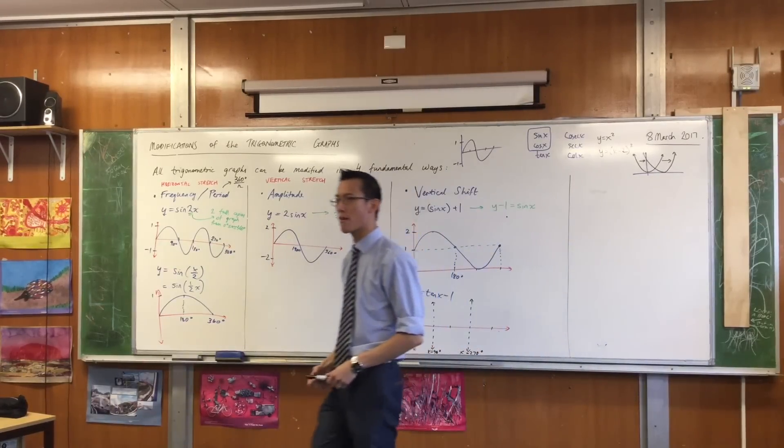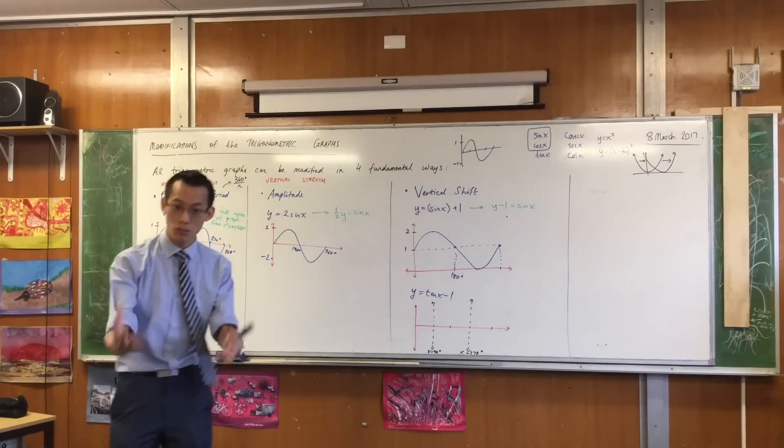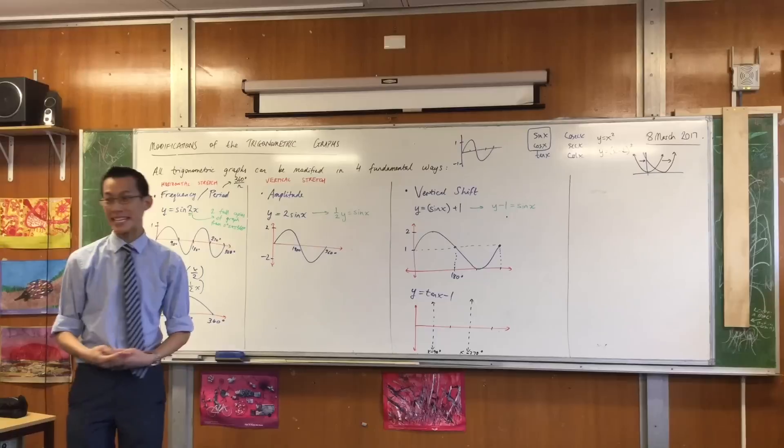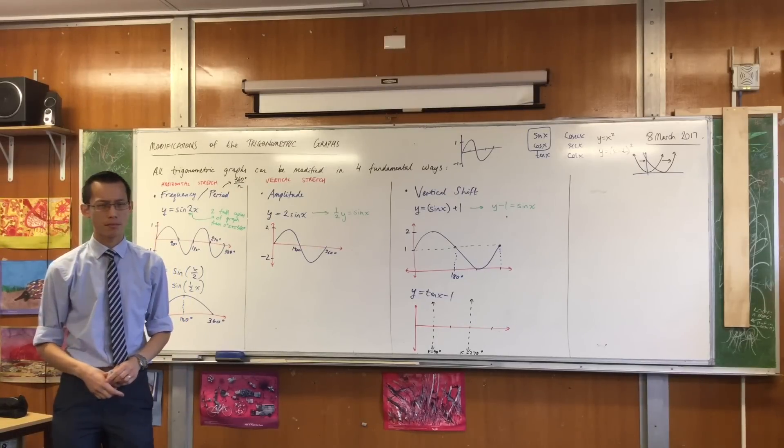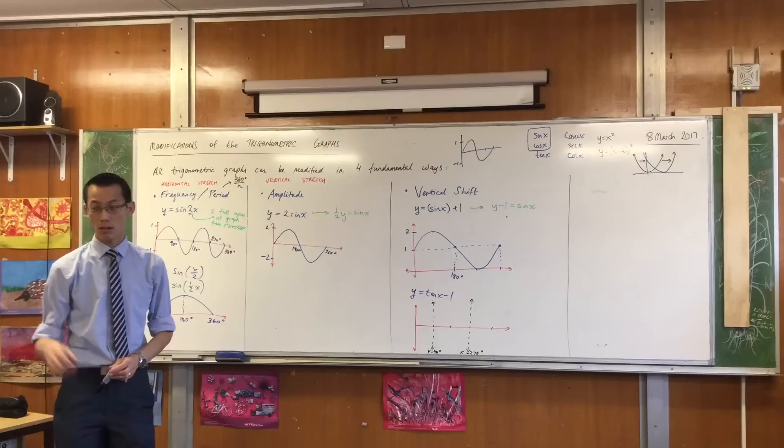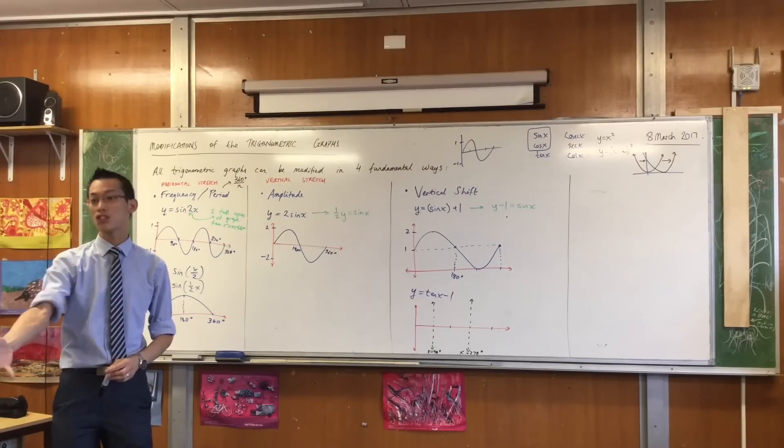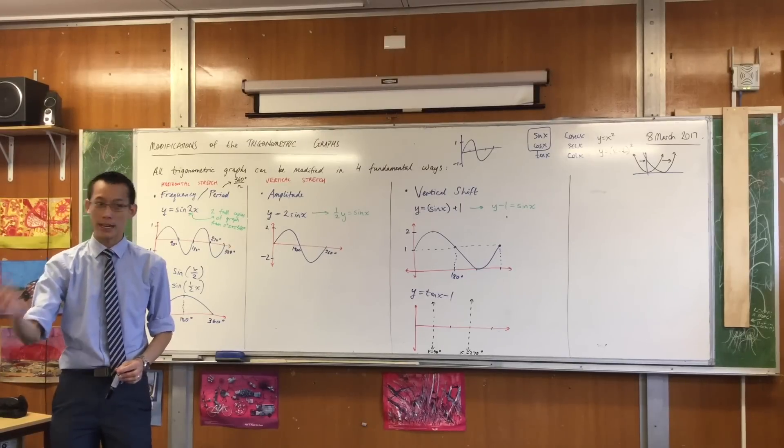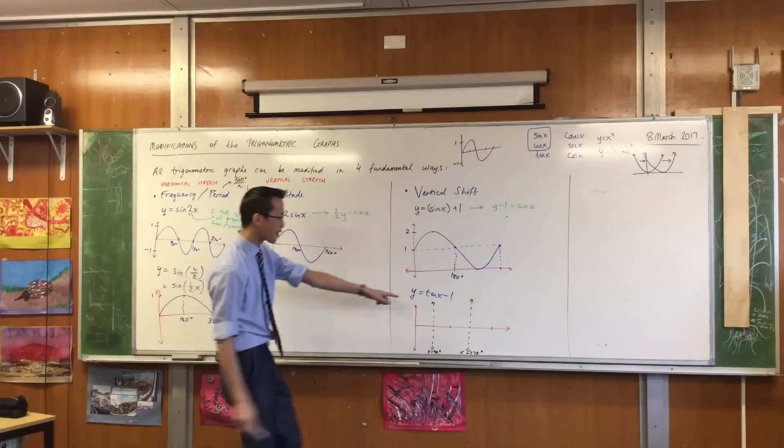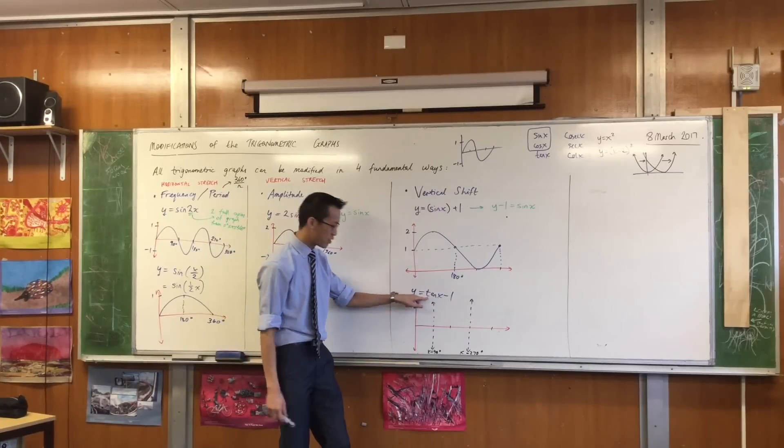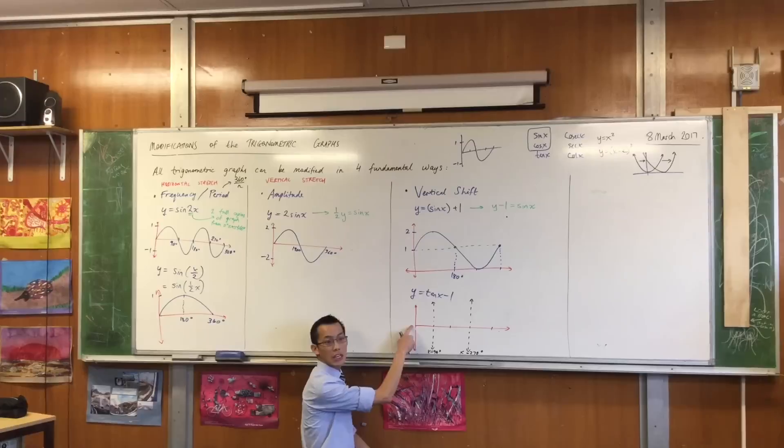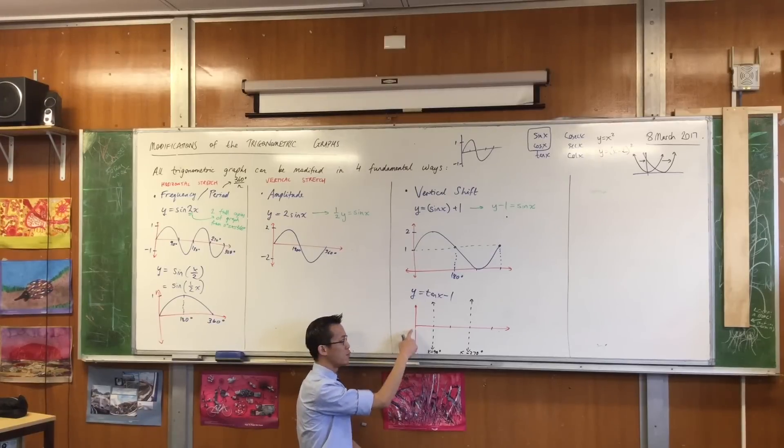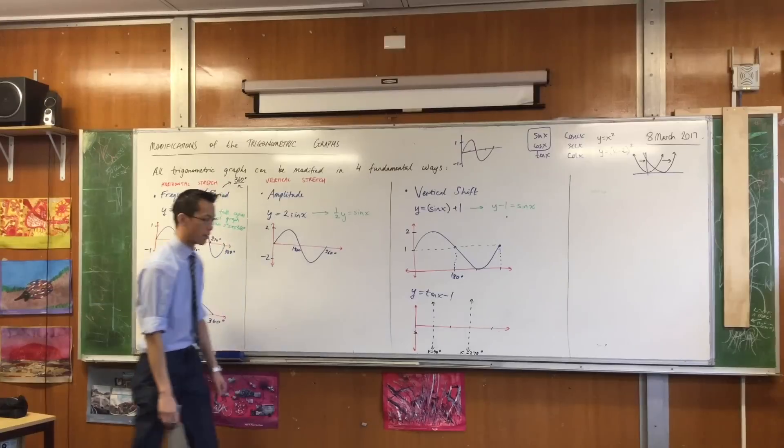Okay, so tan x, do you know the graph well enough to know where does it usually, regularly, begin? When x equals 0, what's tan 0? Tan 0 is 0, isn't it? You can check this on your calculator if you ever have doubt. Tan 0 is 0, but I'm not going to start there anymore, am I? I'm going to 0 minus 1, yeah? So instead of having an intercept here at the origin, I'm actually going to move down a unit. Like that.